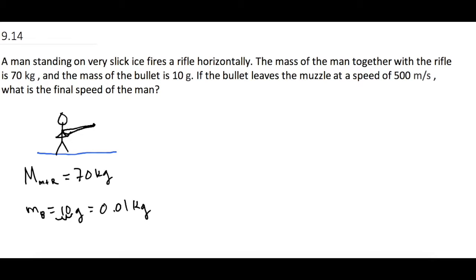They tell us if the bullet leaves the muzzle at a speed of 500 meters per second, what's the final speed of the man? So the final speed for the man plus the rifle is what we're looking for, and they tell us the final speed for the bullet is 500 meters per second.